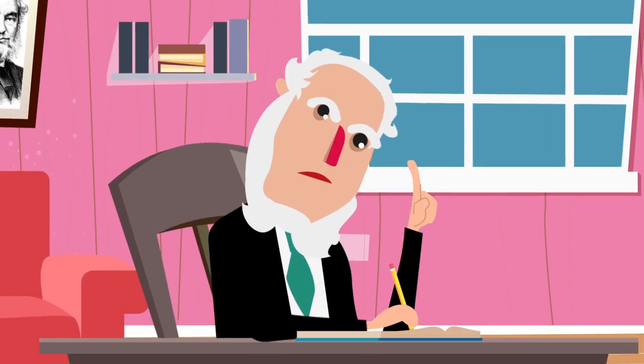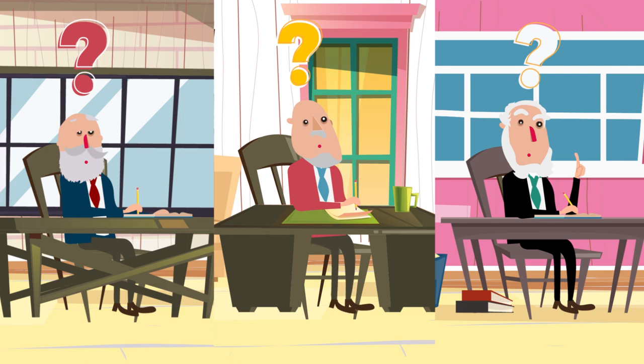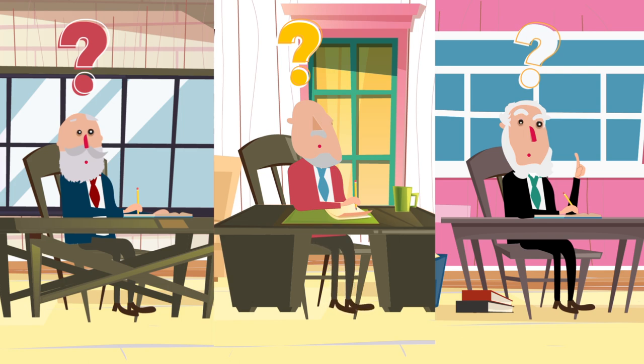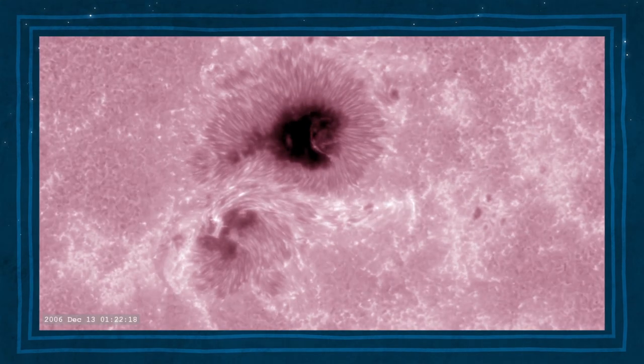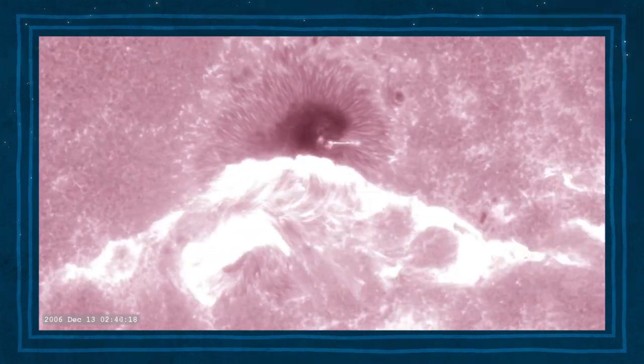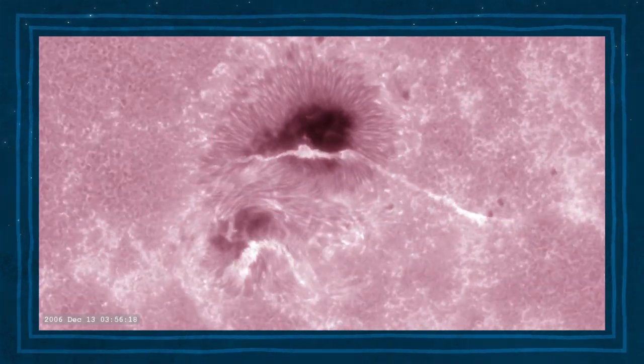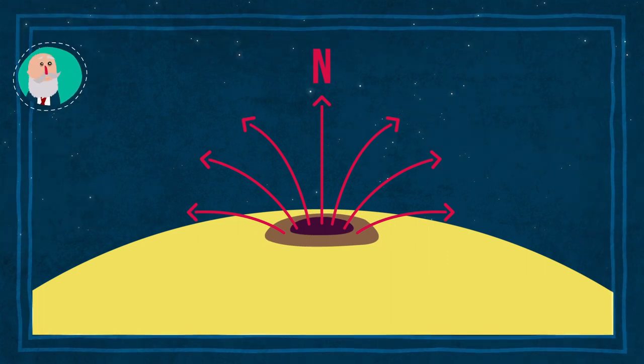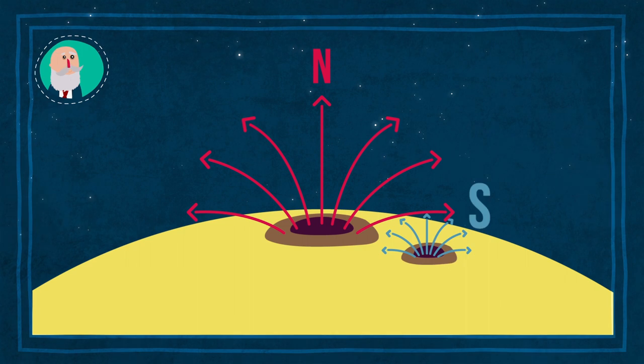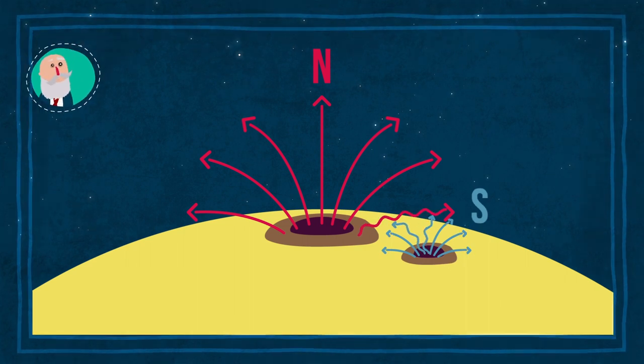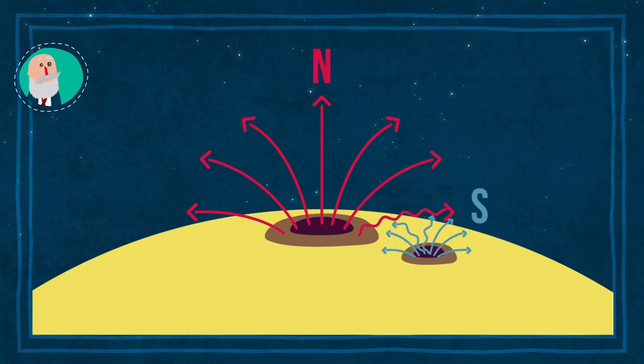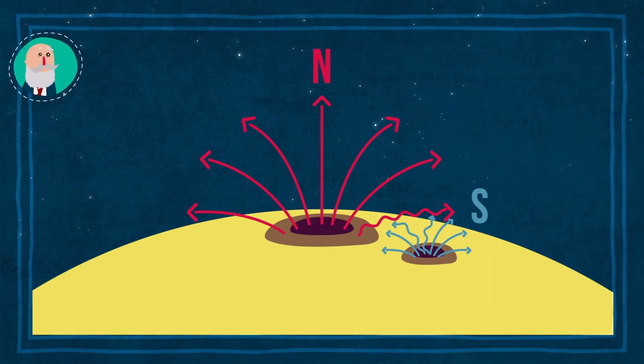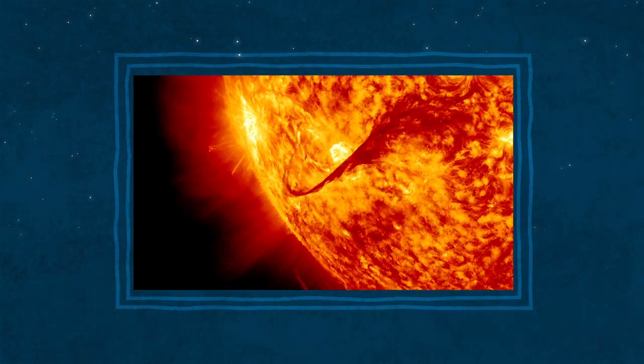But what exactly did Carrington, Hodgson and Stewart see? That day, the strongest solar flare on record unleashed its fury. As we learned in previous episodes, sunspots have strong magnetic fields. Sometimes the fields reconnect with each other and release huge amounts of energy, radiation and particles. These events are called flares.